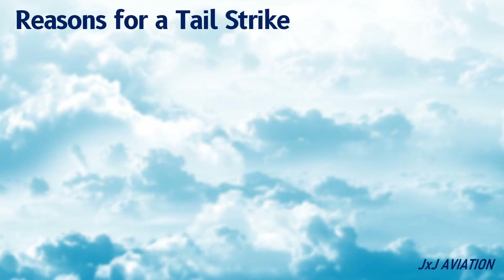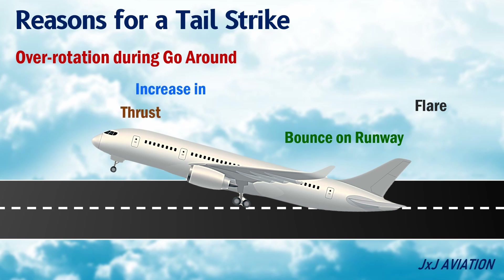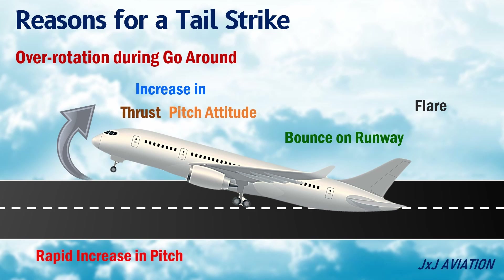Over-rotation during go-around: a go-around initiated during flare, or after a bounce on the runway, can cause a tail strike. An increase in thrust and pitch attitude are required for a smooth and safe go-around. However, if the pitch is increased rapidly and engines did not spool up sufficiently for a go-around, it can result in a tail strike.